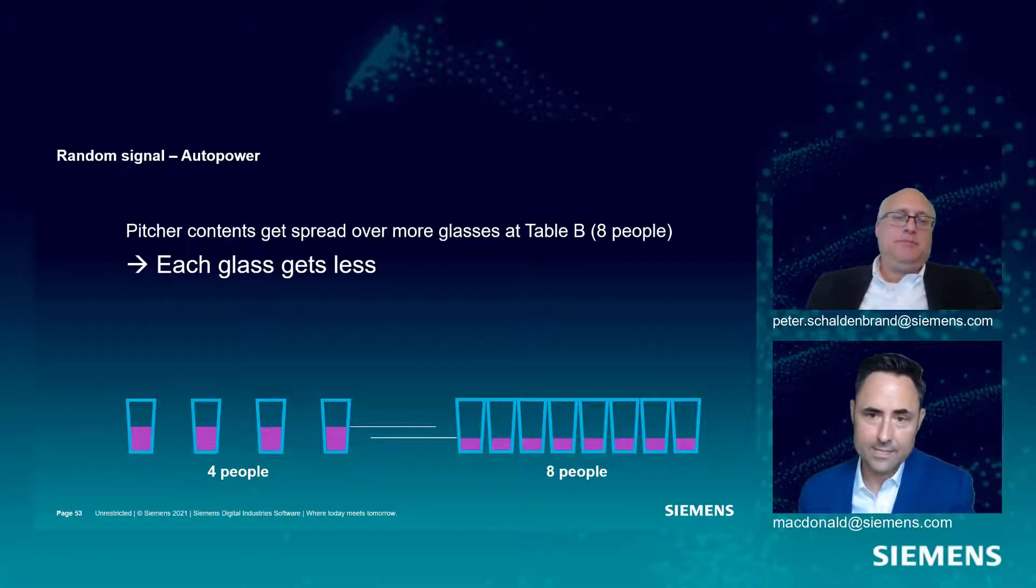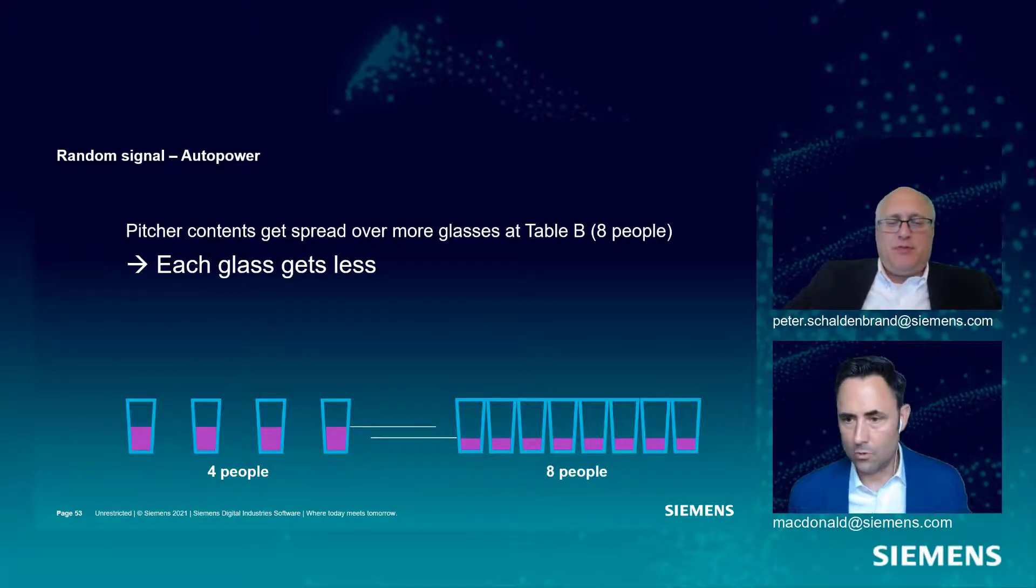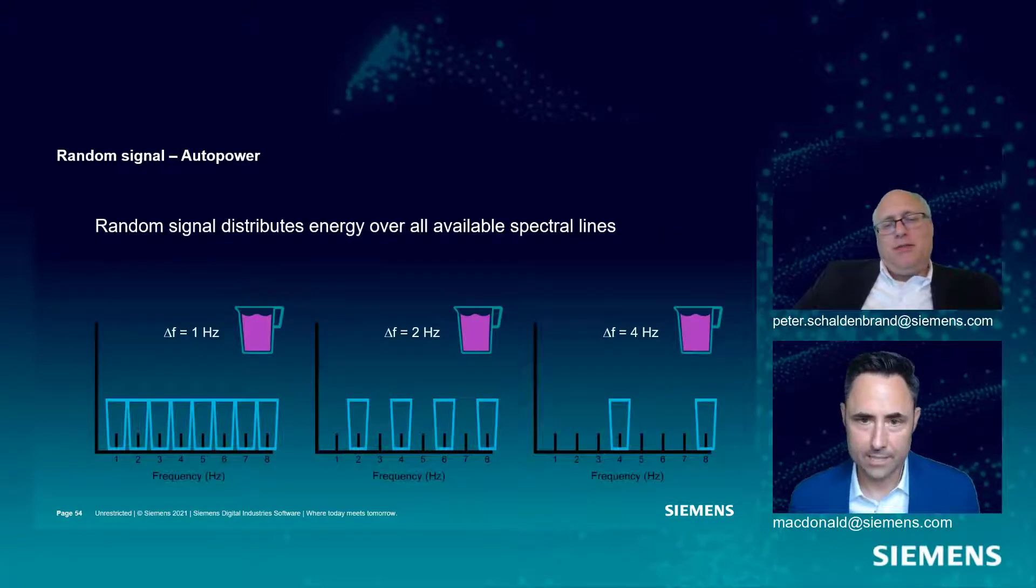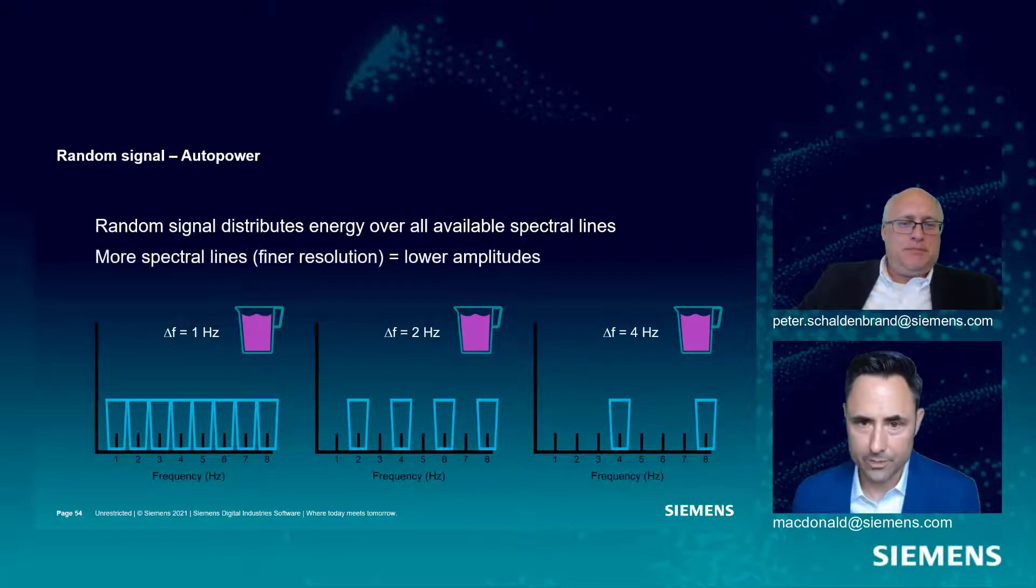In the case of eight glasses, each glass has to get less energy or in this case, less purple Saurus Rex Kool-Aid. It's kind of like a random signal. It gets distributed sort of evenly over all of them. A random signal distributes that energy over all available spectral lines.